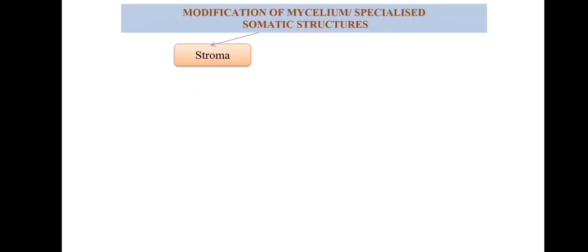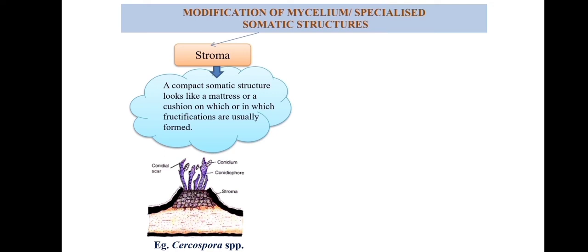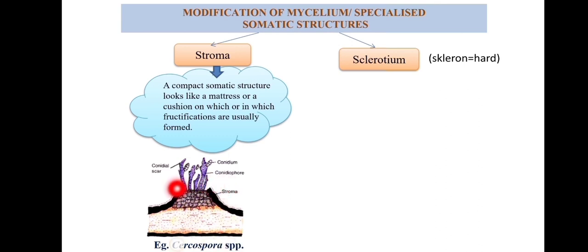The next specialized structure is stroma. Stroma is a compact somatic structure that looks like a mattress or cushion. Over this stroma, different fruiting bodies — either asexual or sexual — are formed. An example is Cercospora species, a fungus which generally infects leaves and produces leaf spots. In the picture, you can see the cushion-shaped stroma over which conidiophores and conidia are produced, which are asexual fruiting bodies.